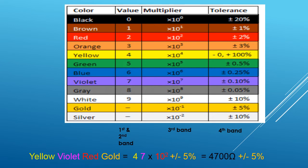For example, suppose I have a resistor with colors yellow, violet, red, and gold. For the first band yellow and second band violet, the values are 4 and 7. For the third band red, the multiplier value is 10 raised to 2, so the value is 47 × 10² = 4700 ohms. The tolerance band is gold, so the tolerance is ±5%. The total resistor value is 4700 ohm ±5%.